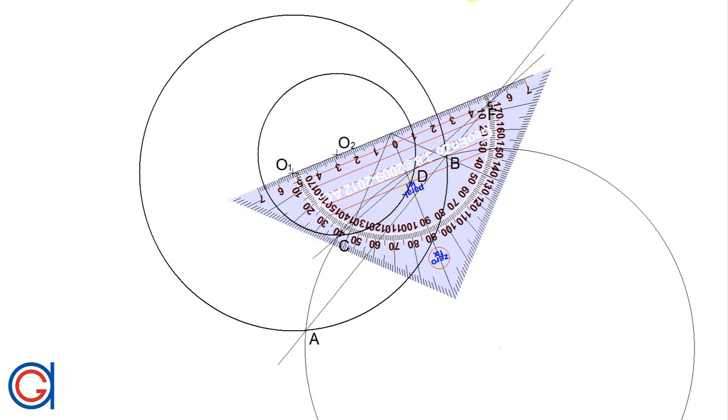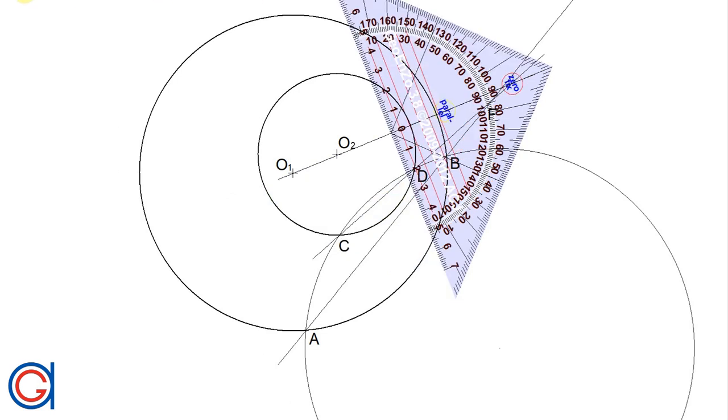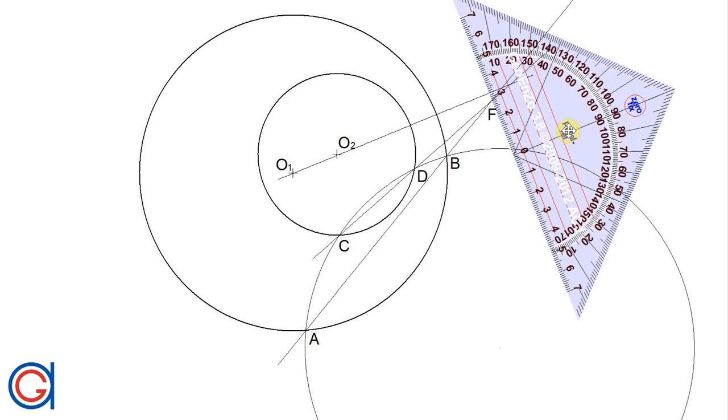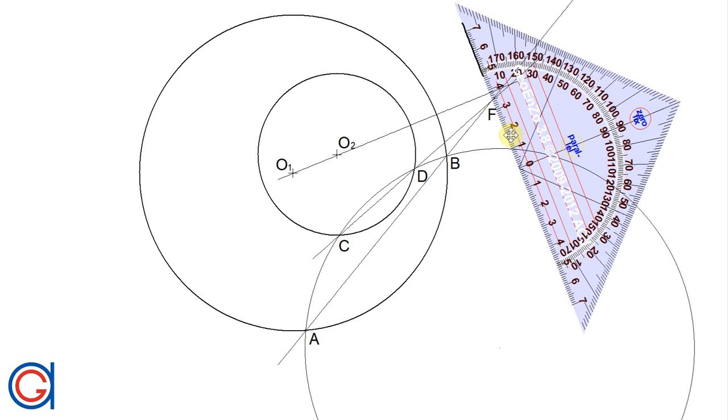Finally, the last step is to draw a perpendicular line to this line passing through point F, as shown here. This will be the radical axis E that we are looking for. Don't forget to put the perpendicularity symbol.